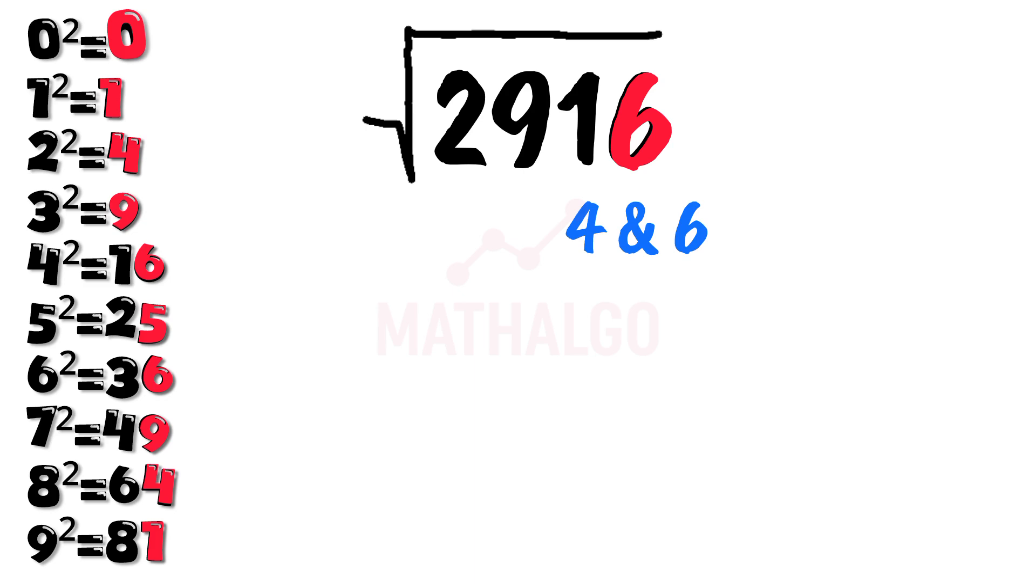Next, cross out the last two digits. We're left with 29. What's the largest square less than or equal to 29? That's 25, which is 5 squared. So we write down 5. Now multiply 5 by 6, 30.